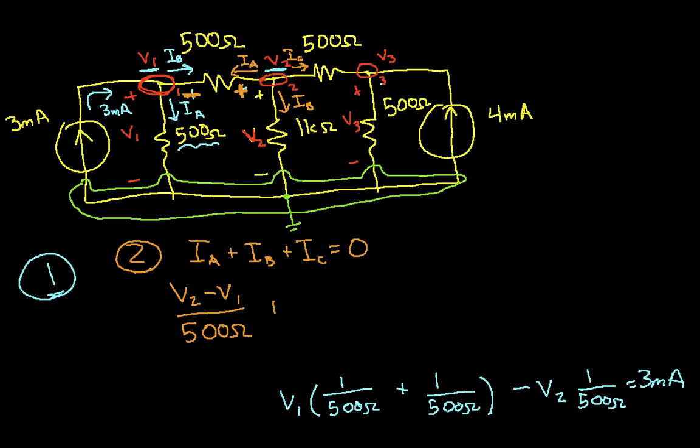Plus IB—that's the current through this 1k ohm resistor, so that's going to be V2 over 1k ohm—plus IC, that's the current through this 500 ohm resistor, and that's going to be V2 minus V3 over 500 ohms. And that will equal zero because I've drawn them all as currents leaving the node.